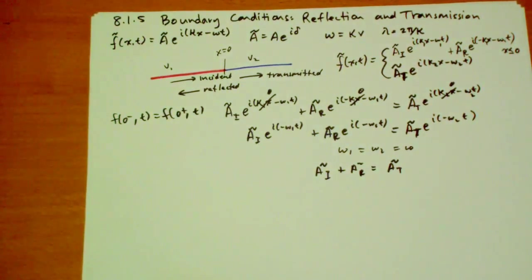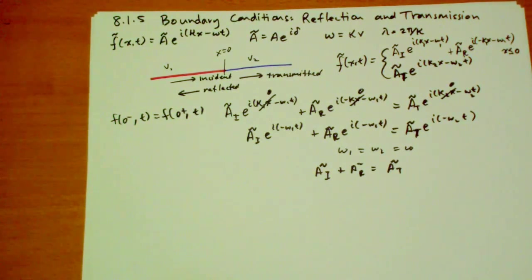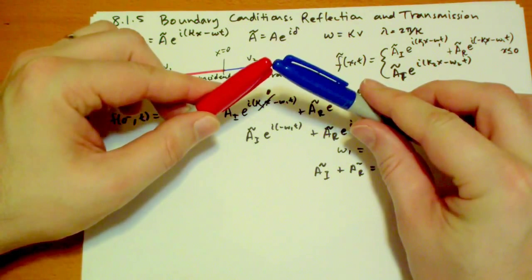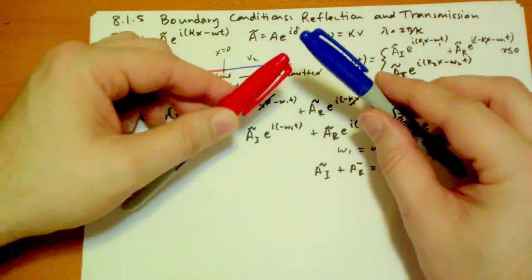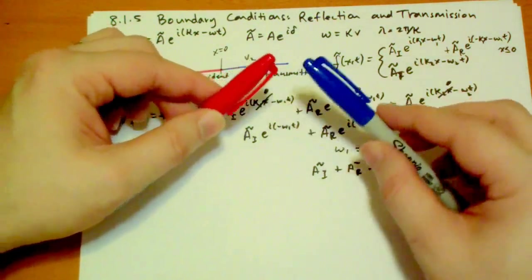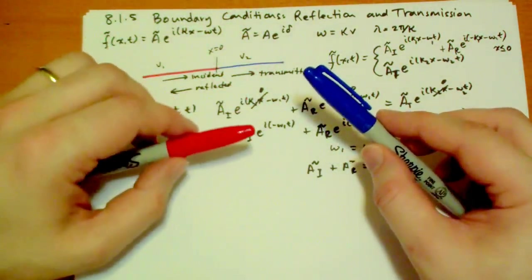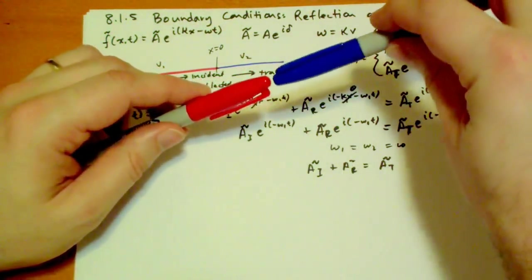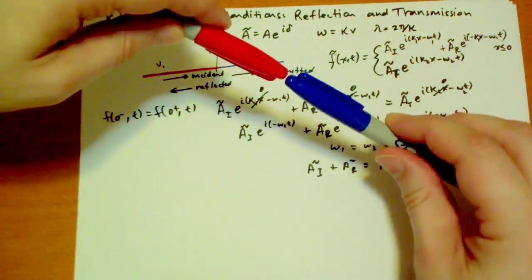The second condition is that the first derivative of the knot with respect to the position has to be the same on either side. And the reasoning behind that is a little more subtle. It has to do with the fact that if you had the two waves meet at different slopes like this, then that would imply there's a tension pulling down this way, there's a net force on that connection. And assuming that there's no mass at the connection itself, then that obviously means that we can't have a net force. So the first derivative has to be the same on either side of that point.